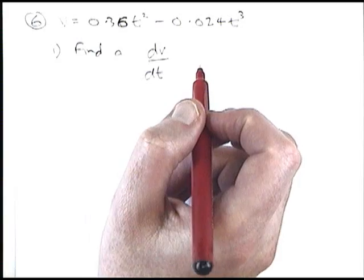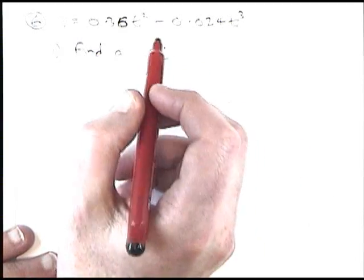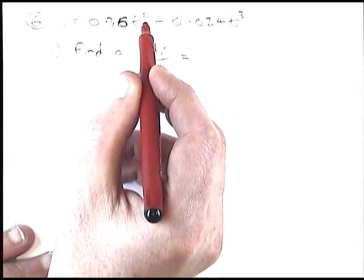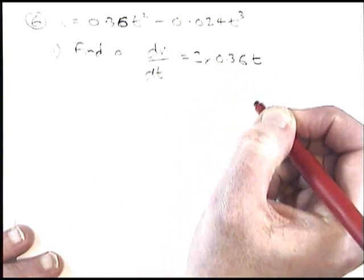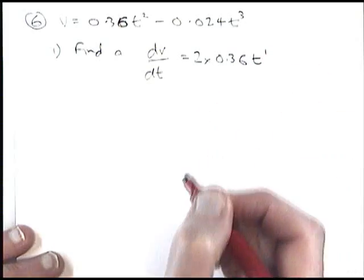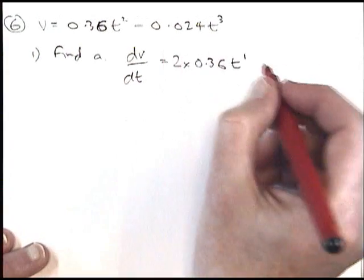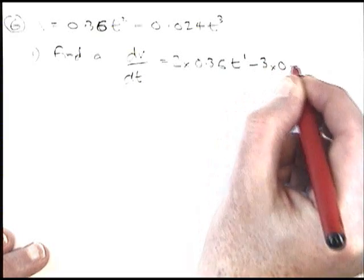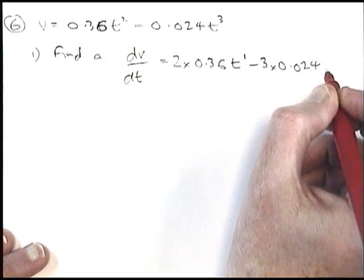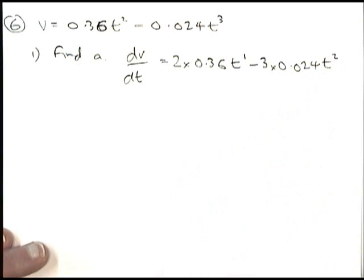Differentiating is when the power comes down the front and the power is reduced. So the 2 will come down the front and be multiplied by the 0.36, and the power on the t goes down by 1. Then I need to do the same thing over here. The 3 has to be multiplied by the 0.024 and the power on the t has to be reduced by 1.